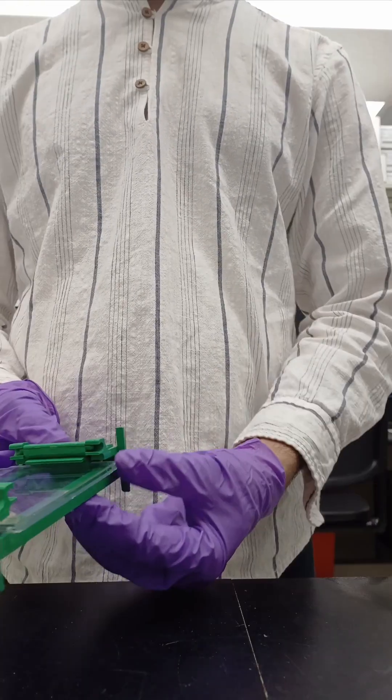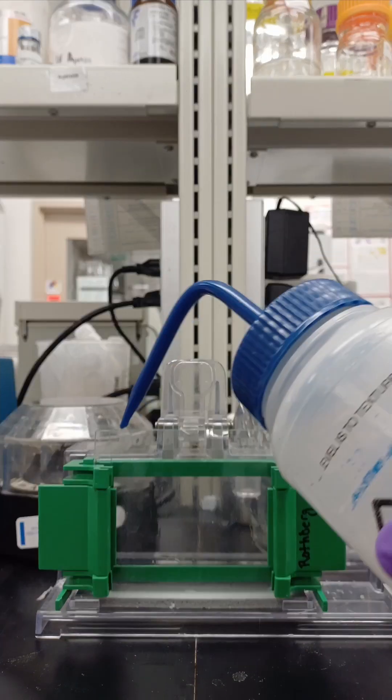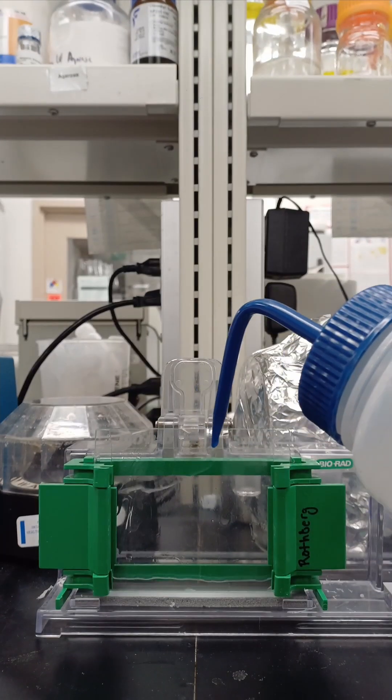Clip the plates together, make sure the edges are even. Now attach them to the casting stand. Pour some water or isopropanol between the plates to check for any leakage.